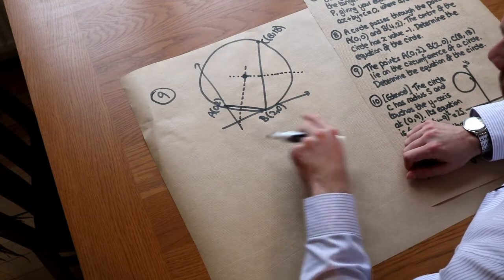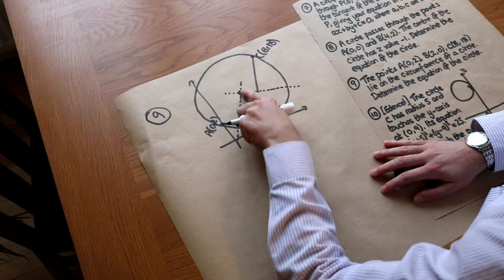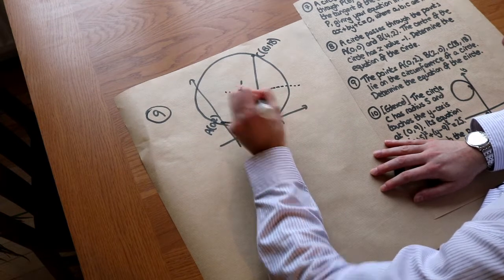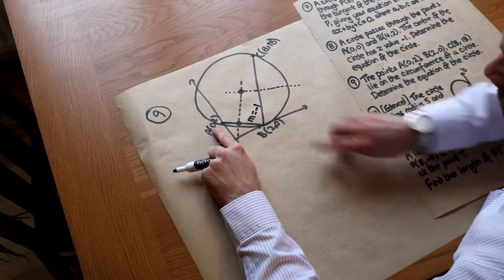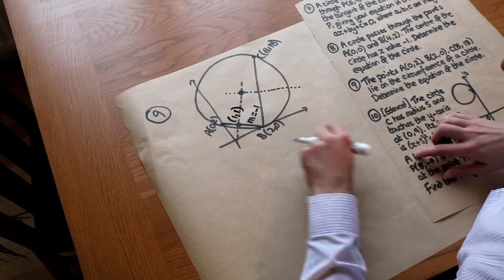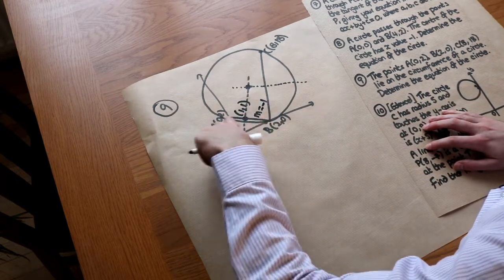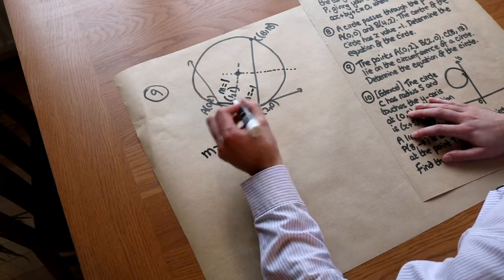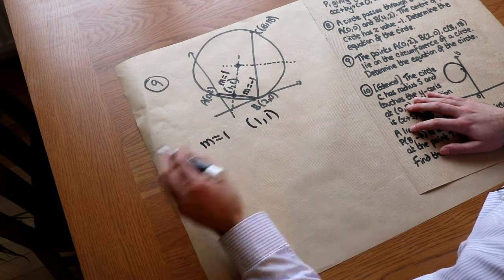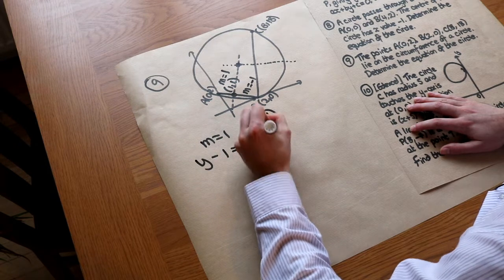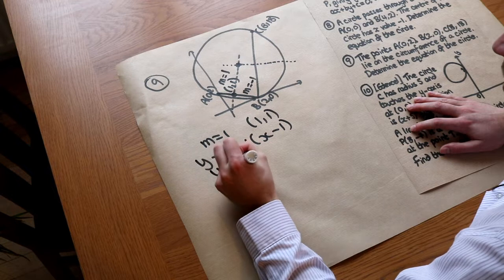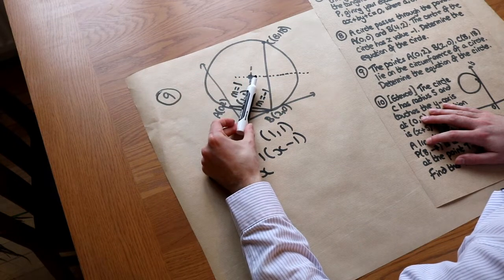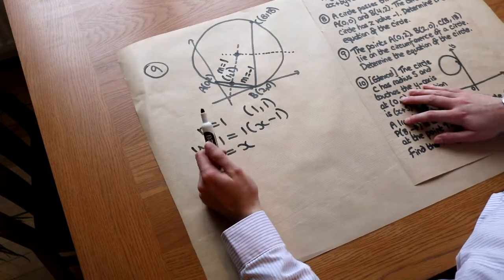For chord AB between (0, 2) and (2, 0): the gradient is minus 1, so the perpendicular bisector has gradient 1. The midpoint is (1, 1). Using Y minus Y1 equals M(X minus X1), the perpendicular bisector simplifies to Y equals X. You can verify this by observation — it's a 45-degree line of symmetry through the origin.